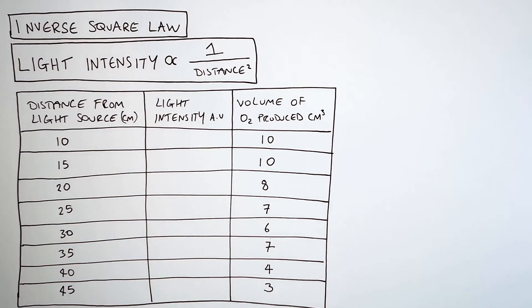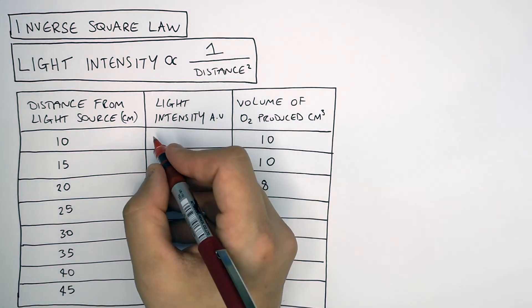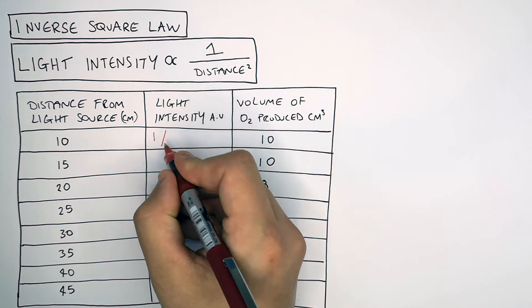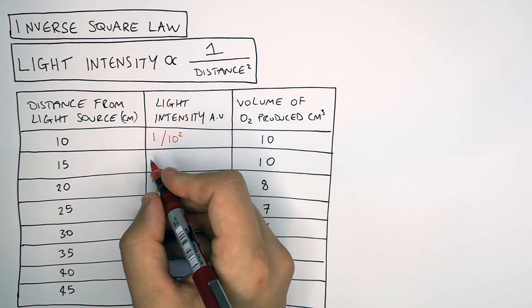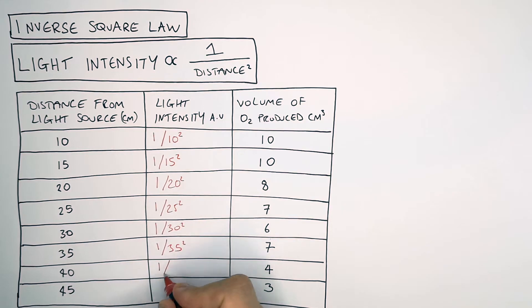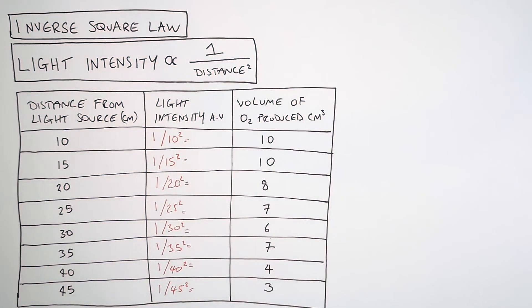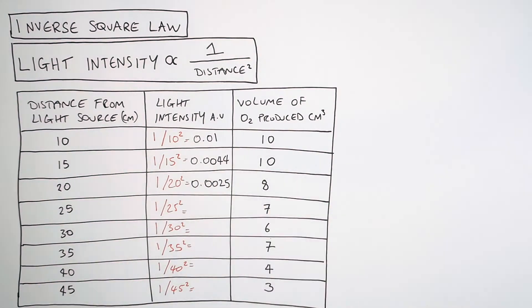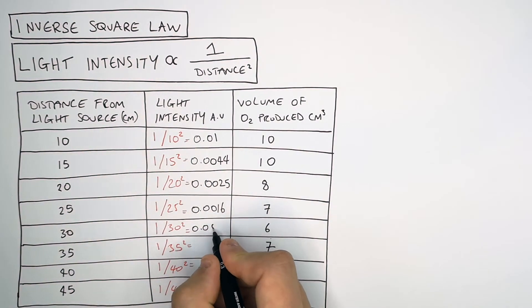But let's now use the distance away from the light source to calculate the light intensity in arbitrary units. I'm going to go for the first one with you, and then you can calculate the rest by yourself. So for the first one, it is 10 centimeters away from the light source. So you do 1 divided by 10 squared. That gives you an answer of 0.01 arbitrary units. So as you can see, what I've done here is just do 1 divided by the distance squared. And that gives you an answer in arbitrary units for each of the different distances.